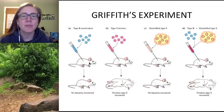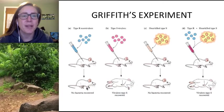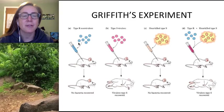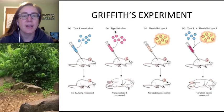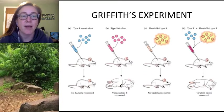He studied two different types of pneumonia bacteria. The R variety — the rough strain — when injected into a mouse, caused the mouse to get sick but then recover. The S variety had a lipopolysaccharide covering, which made it look smooth under a microscope. When injected into the test mouse, the mouse got sick and was not able to recover from that S bacteria strain.